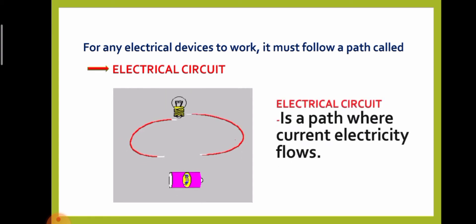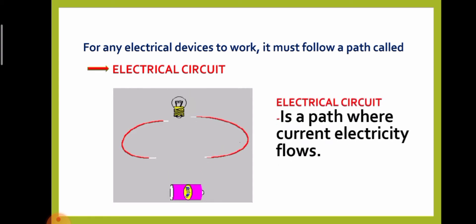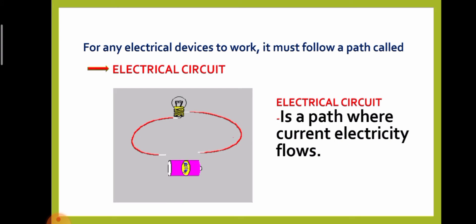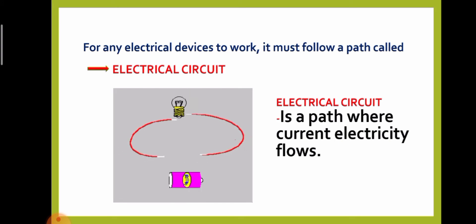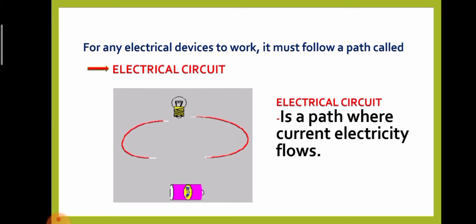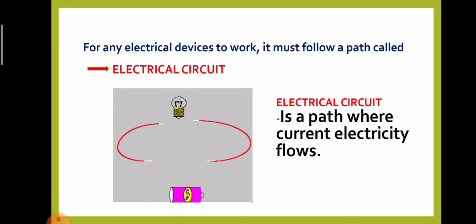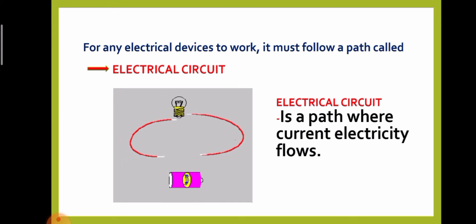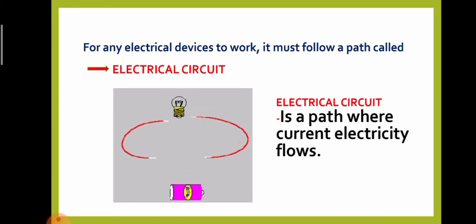An electrical circuit is a path where current electricity flows. It is what you see in the illustration. If the pathway of electricity is connected, the bulb will light up.